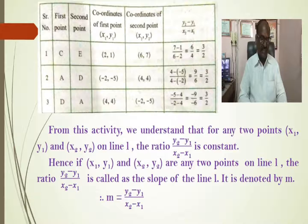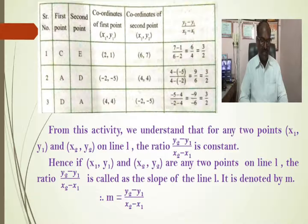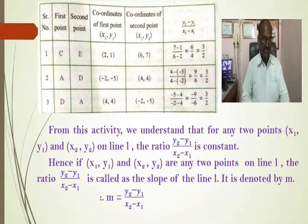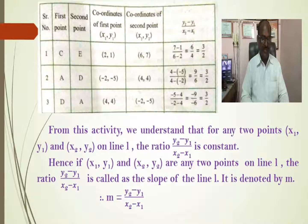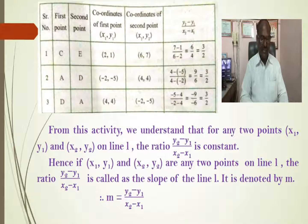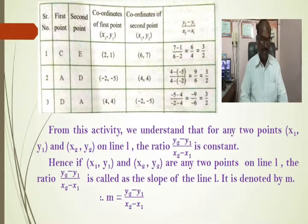From these examples, we understand that for any two points (x1, y1) and (x2, y2) on a line L, the ratio (y2 - y1)/(x2 - x1) is constant. Hence, if (x1, y1) and (x2, y2) are any two points on the line L, then the ratio (y2 - y1)/(x2 - x1) is called as the slope of line L. It is denoted by m. Therefore, m = (y2 - y1)/(x2 - x1).